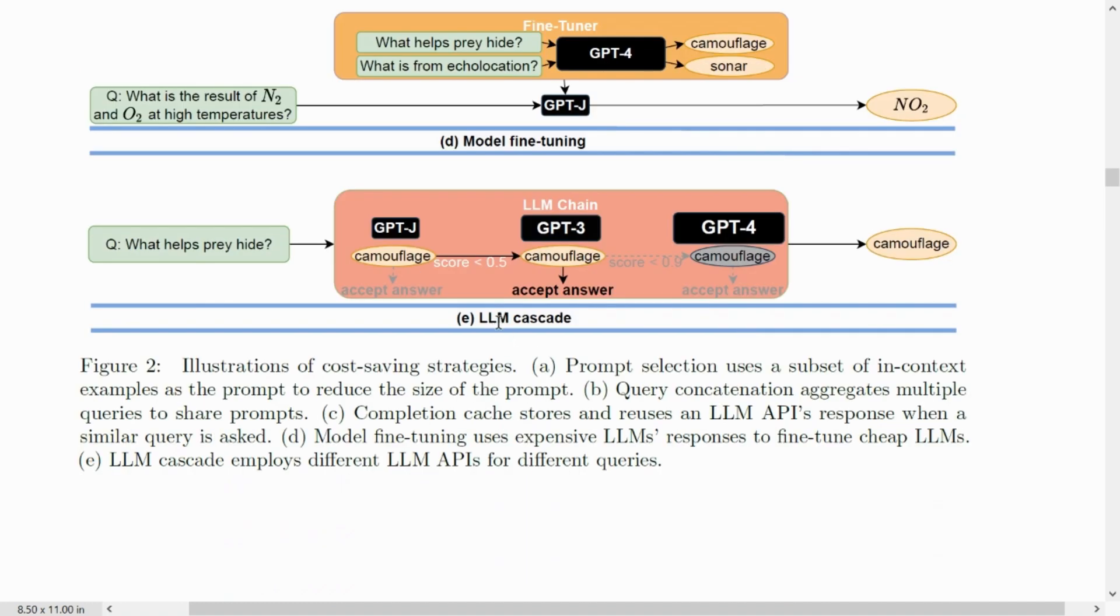The last one is LLM cascade. Here, what the system would decide is that first, it will ask the lower cost GPT-J, in this case, for the answer. And if the score is less than 0.5, it will move on to the next higher performing LLM, which is GPT-3 in this example. And if the score is even not acceptable in this case, it will move ultimately to GPT-4 and get the answer. So this strategy basically will select which LLM APIs to use. You have to give it the permission to use all the LLMs. And from all those LLMs, it would iteratively select which of the LLM APIs to use for bringing down the cost and improving the performance.